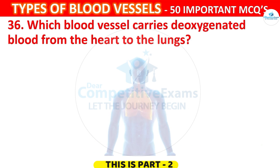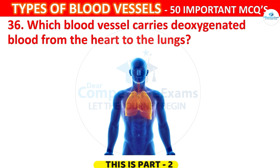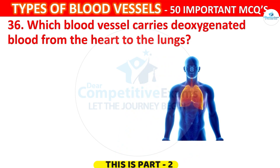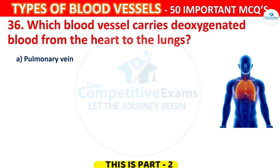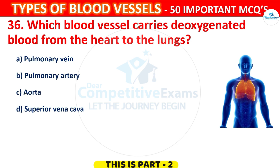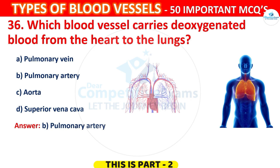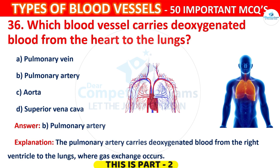Question 36. Which blood vessel carries deoxygenated blood from the heart to the lungs? The options are: Pulmonary vein, Pulmonary artery, Aorta, or Superior Vena Cava. The correct answer is B, Pulmonary artery. The pulmonary artery carries deoxygenated blood from the right ventricle to the lungs where gas exchange occurs.